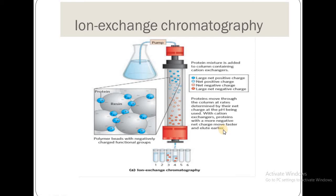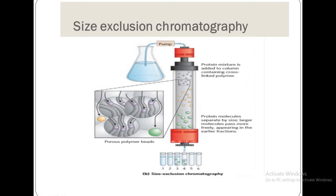A protein that is totally negatively charged will elute first because the stationary phase is also negatively charged, so the opposite-charge repulsion means the protein is not retained. The proteins elute faster and we can obtain the fractions. Next is size exclusion.